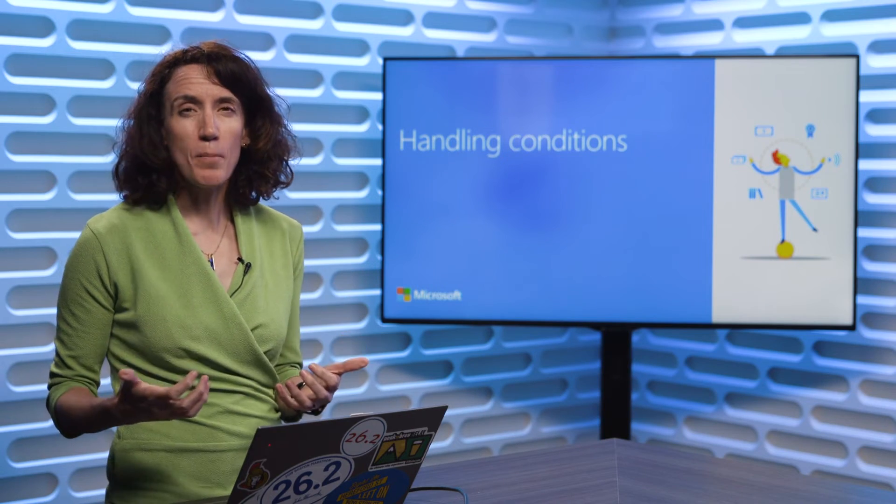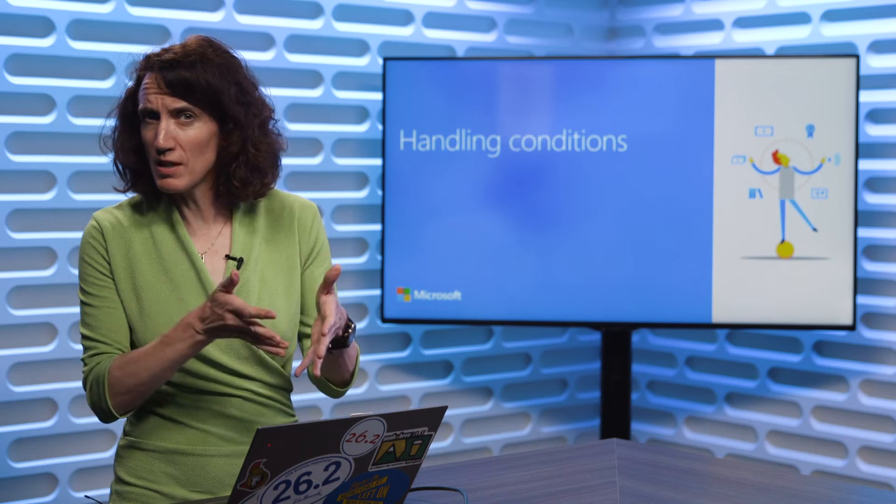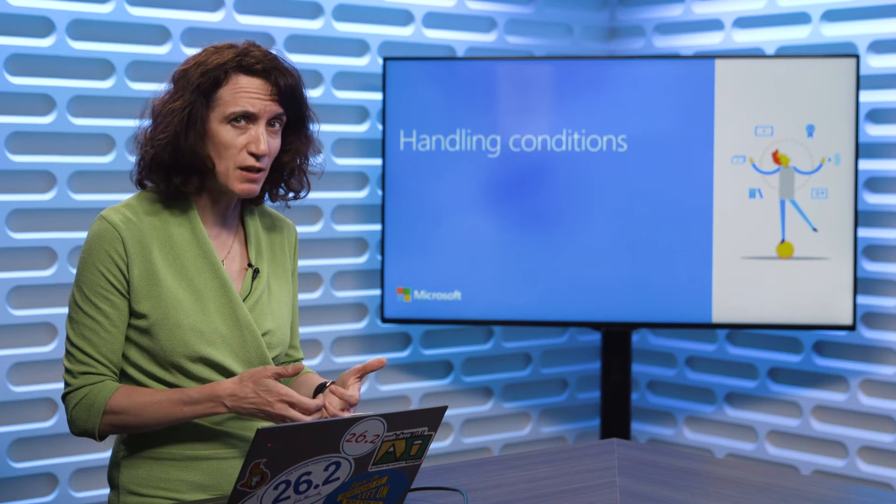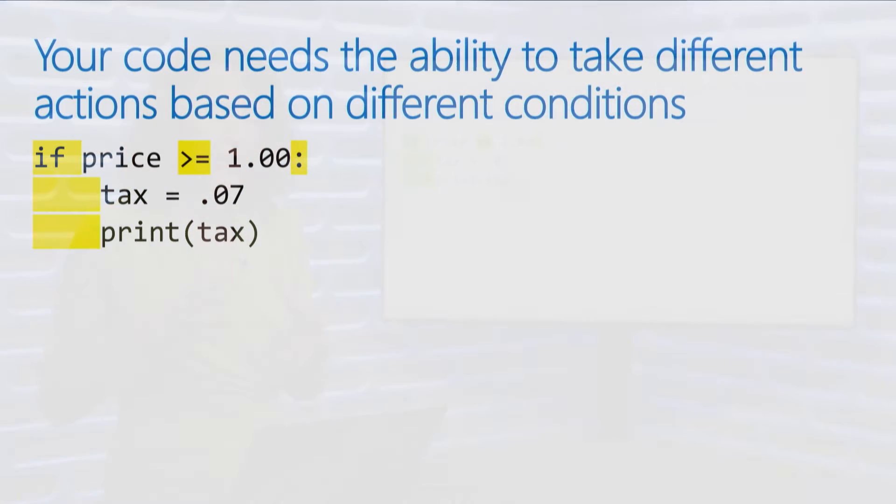Once we get into writing more complex code, you're going to need to be able to say when this happens, do this. When something else happens, react differently. That's why we need to be able to handle conditions inside of our code. You'll need the ability to react differently and take different actions based on what's happening.